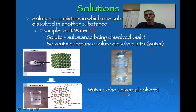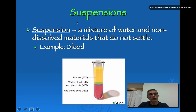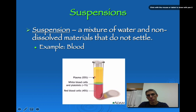On Earth, we consider water the universal solvent. The second category of mixtures is a suspension — a mixture of water and a non-dissolved material. A good example is blood. Blood divides into basically three layers: plasma on top, white blood cells in the middle, and red blood cells on the bottom. A suspension causes these particles to stay suspended within the water at certain positions in the container.